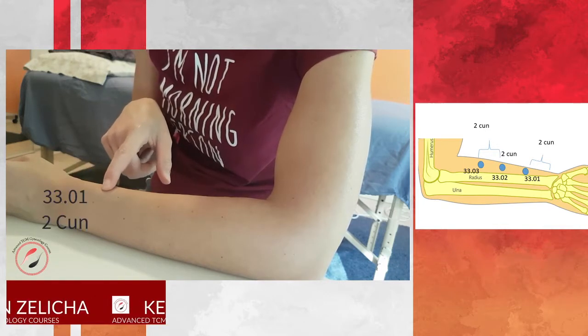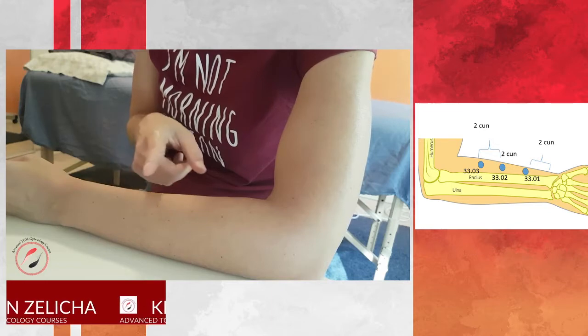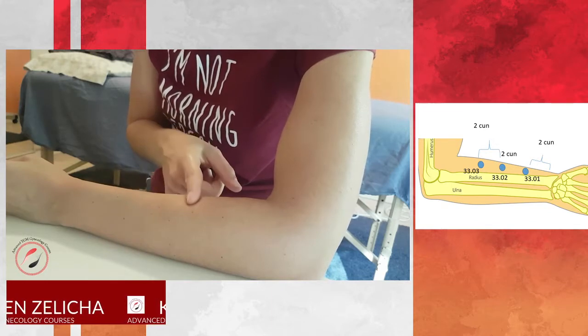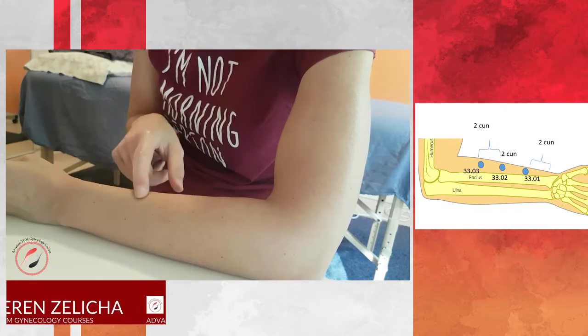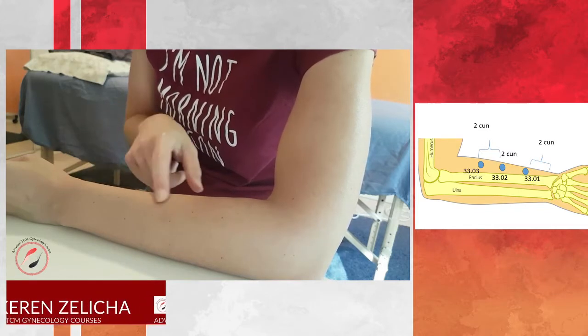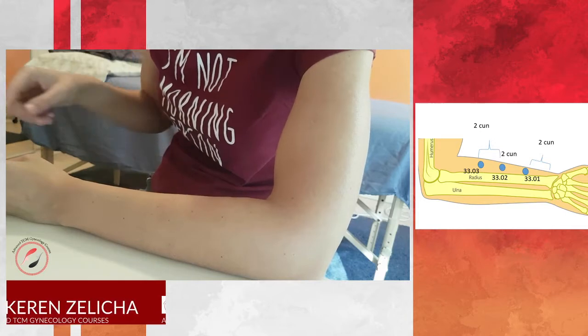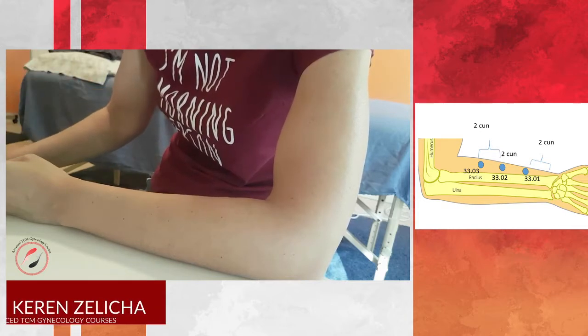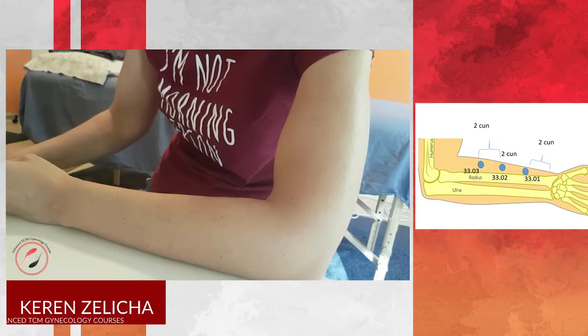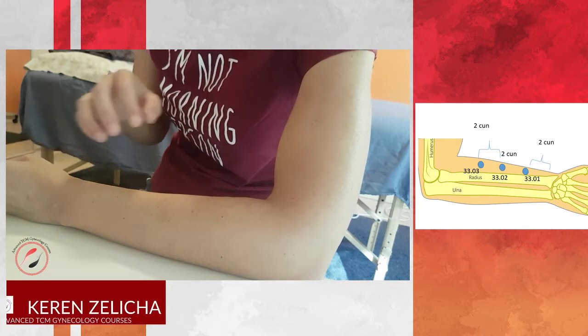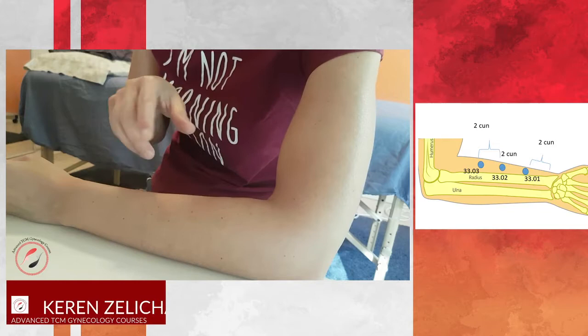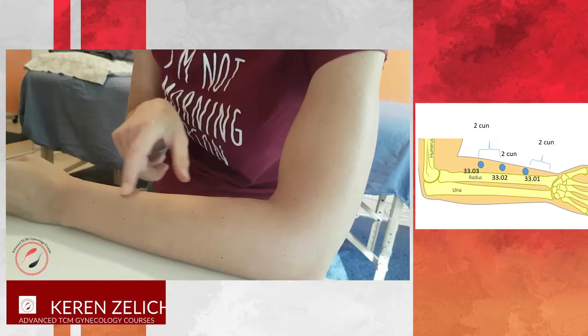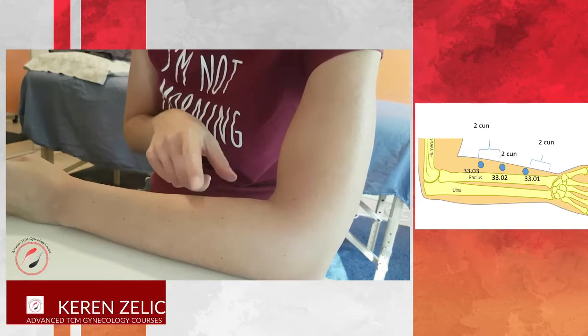The points are located 2 cun, 4 cun, and 6 cun above the wrist on the large intestine meridian. The points are indicated for large intestine issues and also for women's issues. The points influence the large intestine and the lower jiao.